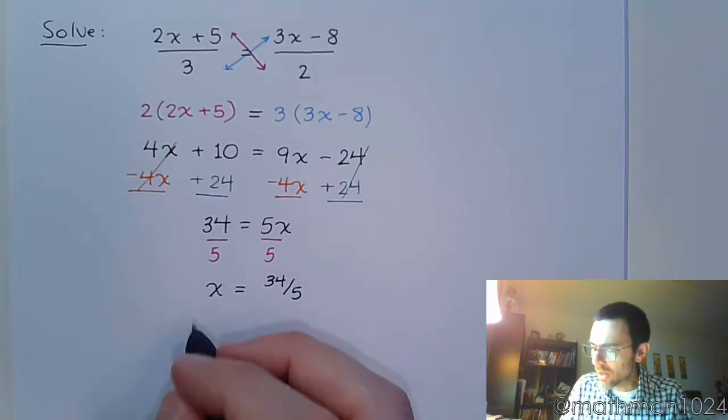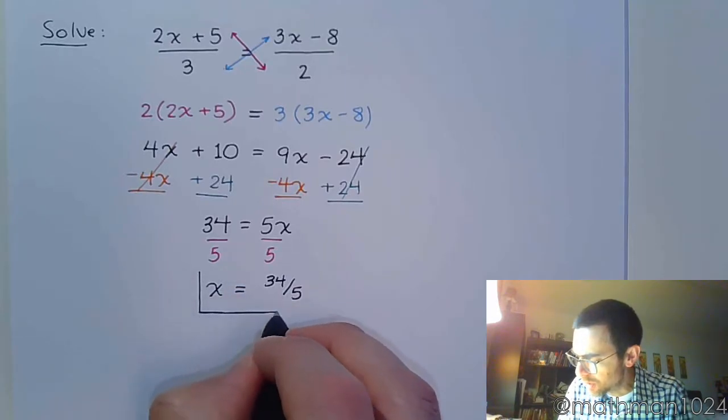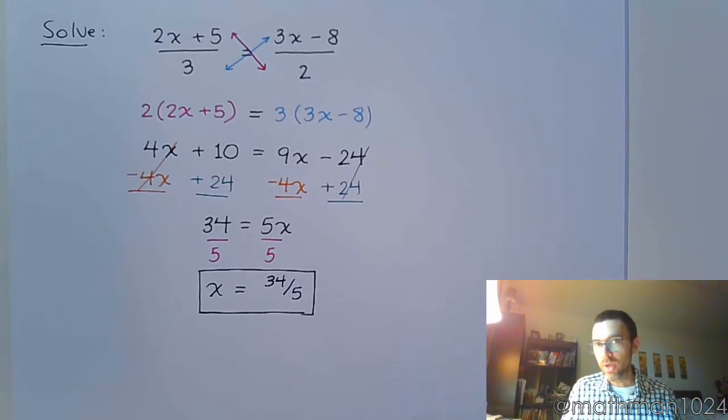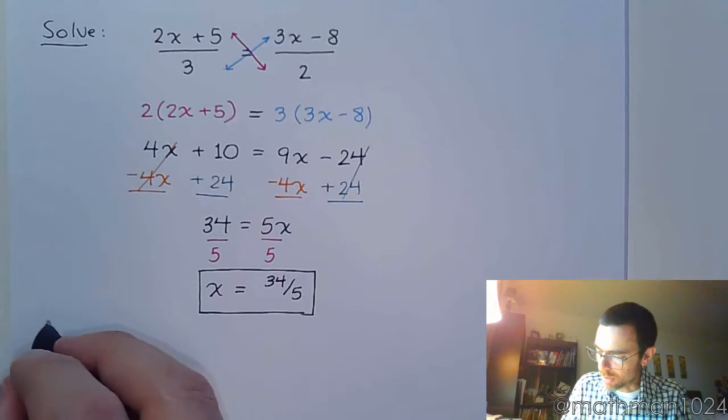It's really not all that bad, because we have a proportion, and because we can set the cross products equal. Now, I want you to know this is not the only way to solve this. In fact, let me go ahead and show you another way of tackling this problem.